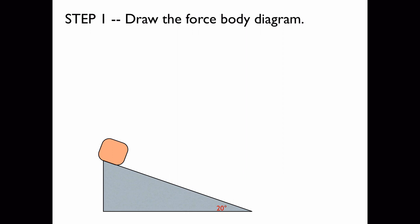Step 1 is to draw the force body diagram. Now there are three forces acting on the block. There is the gravitational force acting straight down, the normal force acting perpendicular to the incline, and the frictional force which opposes the block's motion down the incline.